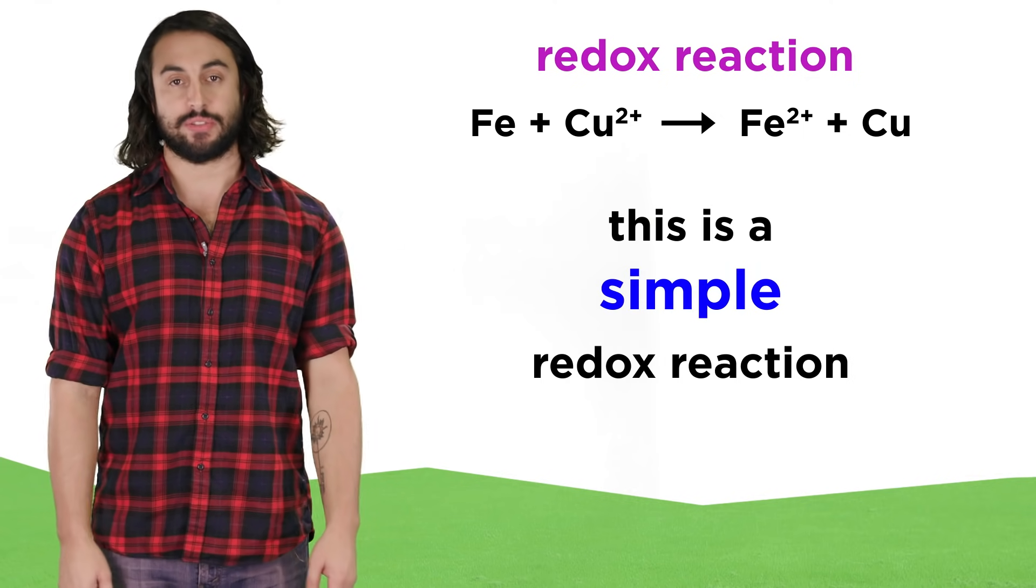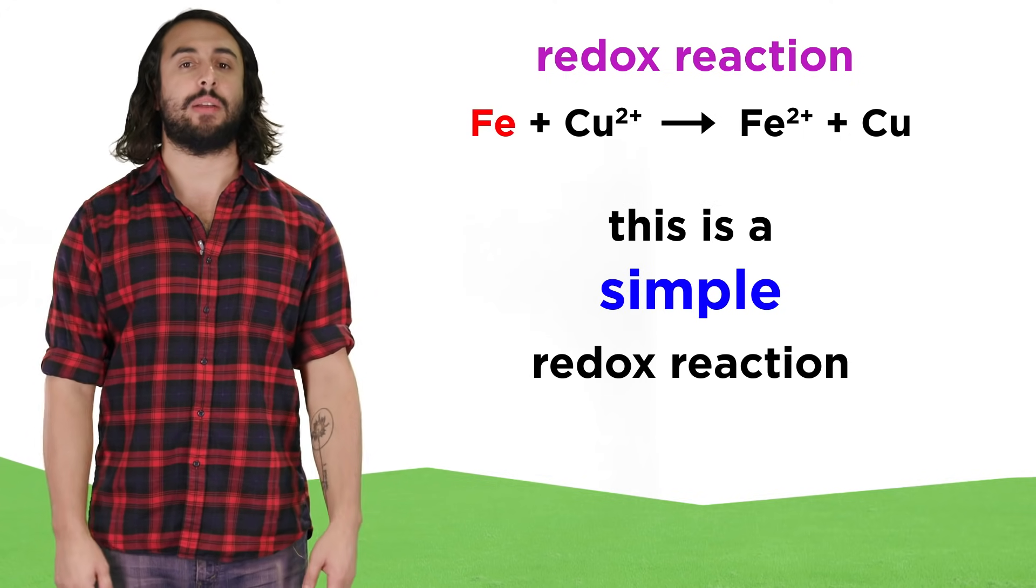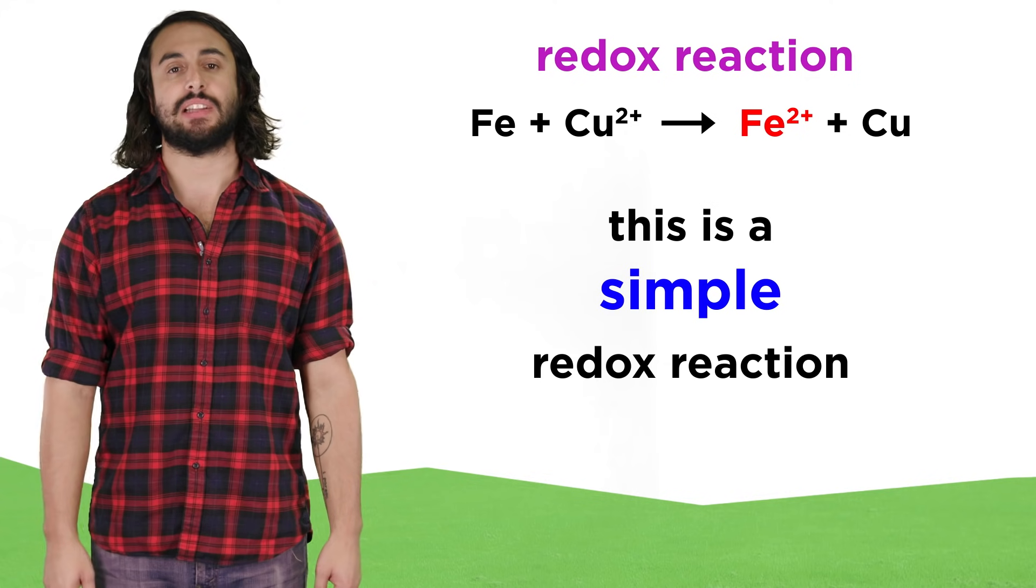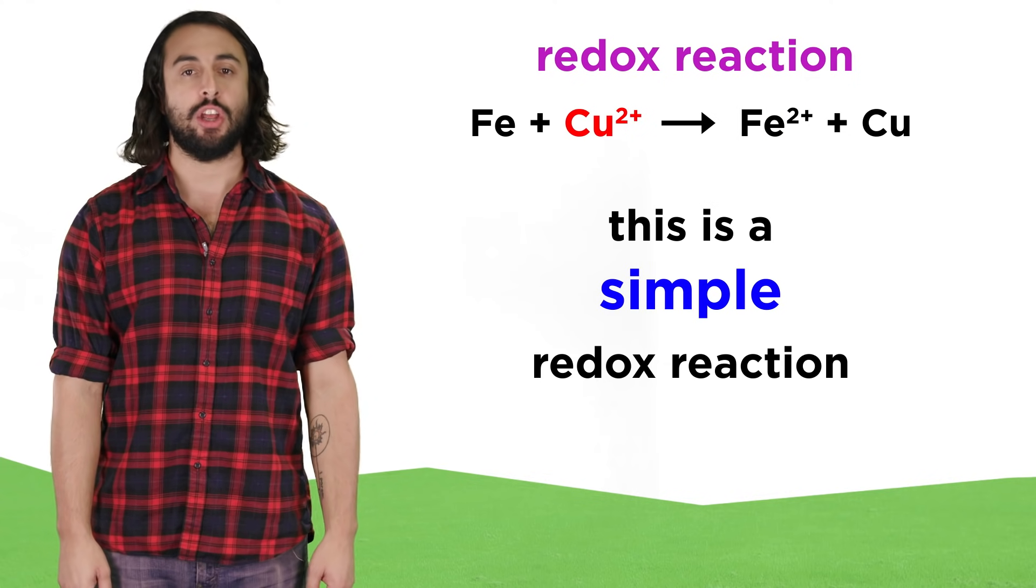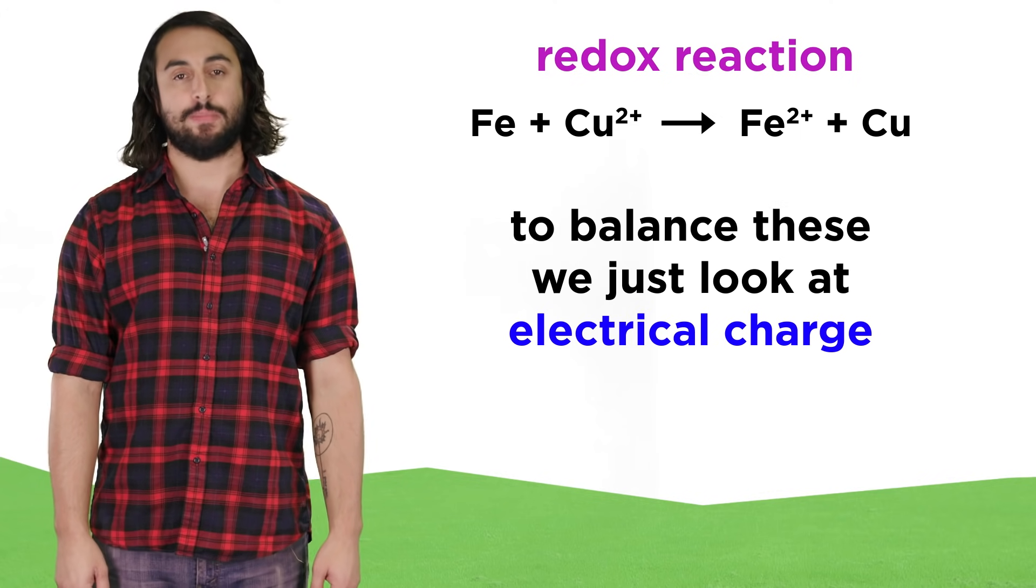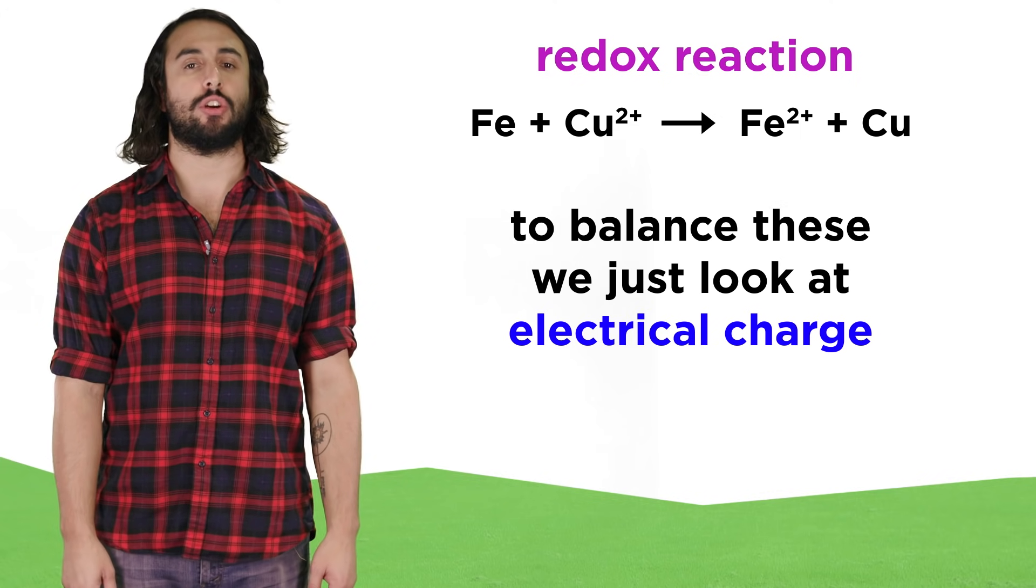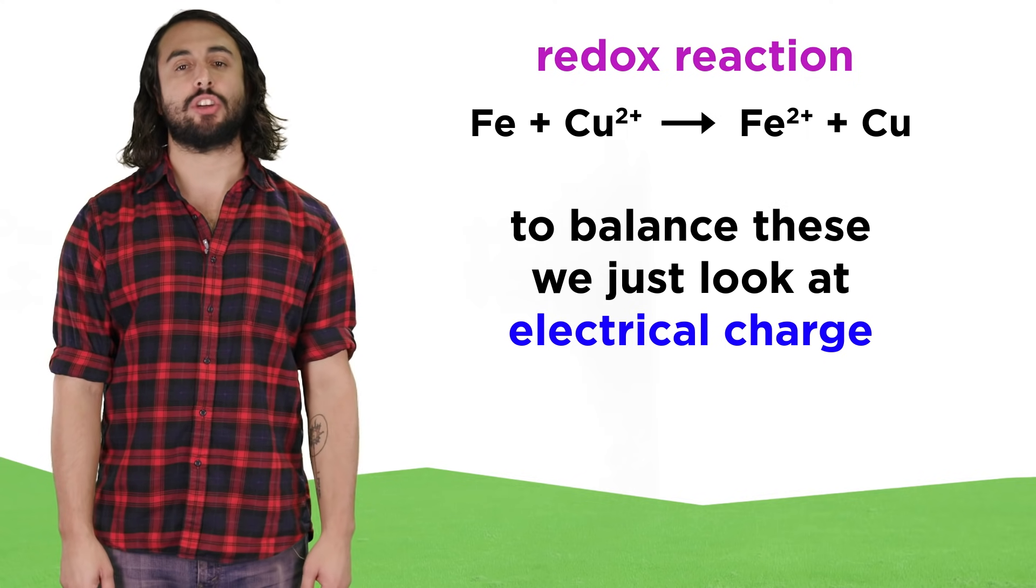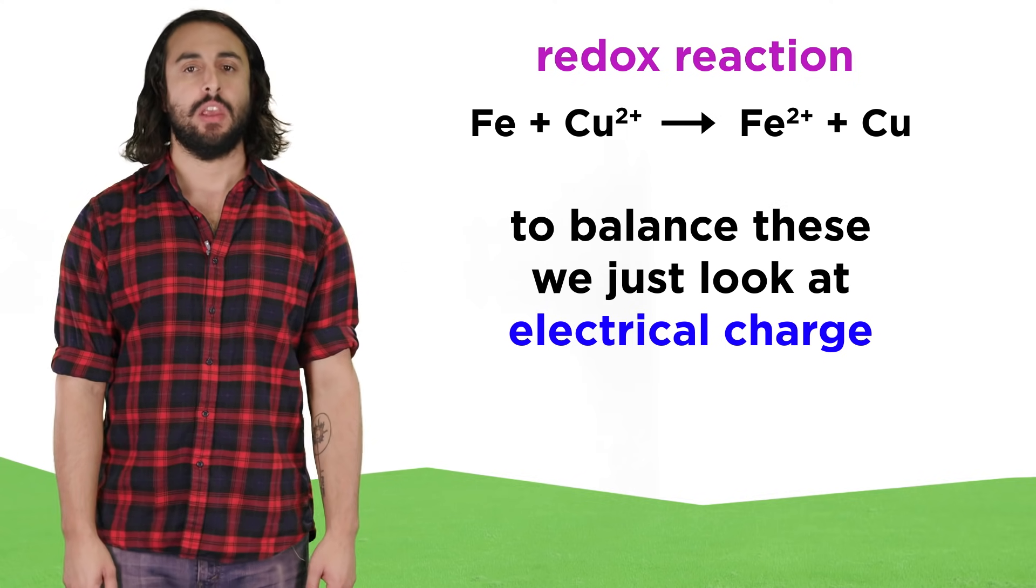Sometimes redox reactions are very simple, where a neutral metal atom is oxidized to become a metal cation when it transfers electrons to some other metal cation to form a different neutral metal. These reactions are easy to balance because we simply need to make sure that the charges are balanced by adding electrons and coefficients if necessary.